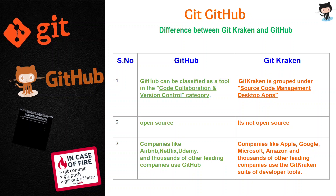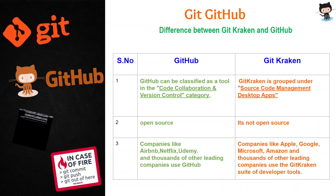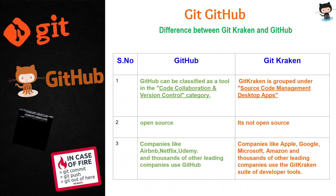So the first thing is: what is the difference between GitKraken and GitHub? Basically, GitHub and GitKraken are different. GitHub can be classified as a code collaboration tool and it also has version control. I have explained what version control is in previous tutorials — you can go back and see those. Code collaboration means you can collaborate your code on GitHub, whereas GitKraken is a source code management tool.